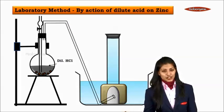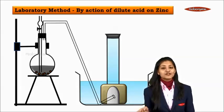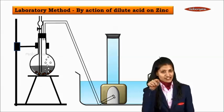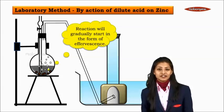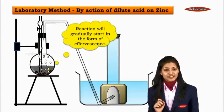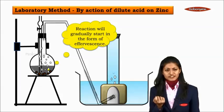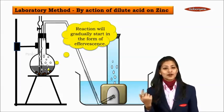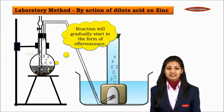Now when the reaction takes place between zinc granules and dilute HCl, it leads to formation of hydrogen gas. And these hydrogen gases pass through the delivery tube. Reaction will gradually start in the form of effervescence. Now what do we mean by effervescence? These are rapidly forming bubbles which are called as effervescence.